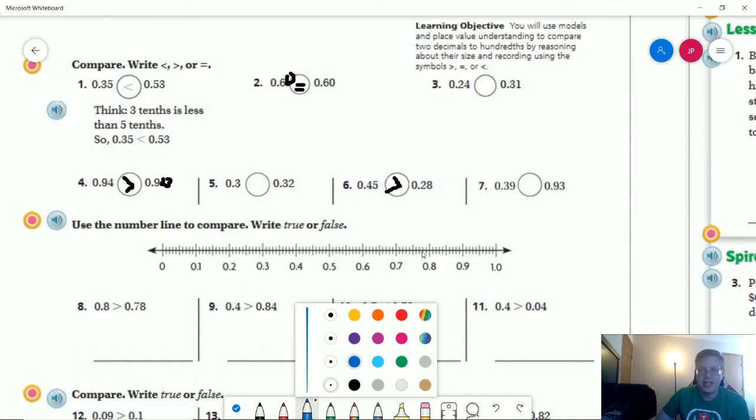Point eight or eight tenths would go right here, and then I would come over two to the left to get seventy-eight hundredths. So this one would be true.